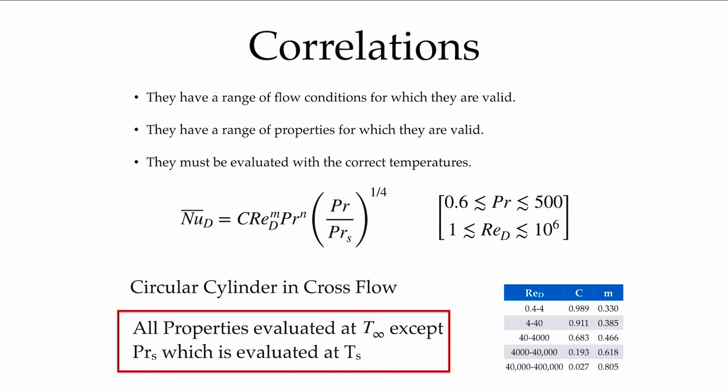Clearly, the person that made this correlation found that it correlated the data better if they added this term here, accounting for the variations in the Prandtl number. But you'll see different choices, and it's important to remember that this data is either correlated into an expression like this from experimental data, as it is in this case here, or it comes from some analytic solution, and again is correlating the data from that analytic solution.